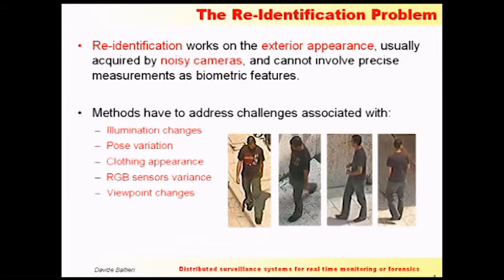This comes with a very long list of challenges that need to be addressed: illumination changes because a person can be seen during the day, at night, inside or outside a building; pose variation — they can run, walk, or sit down; clothing appearance because people change clothes from one day to the next; different kinds of hardware from different vendors; different cameras because CCTV networks were built over many years, not in just one day; and also viewpoint changes because cameras are placed wherever there is room.